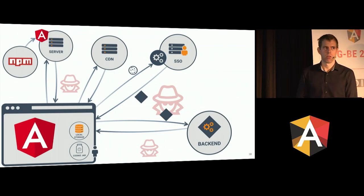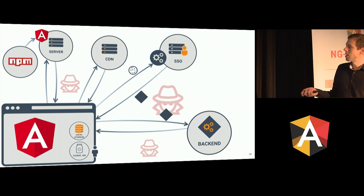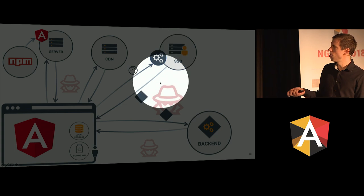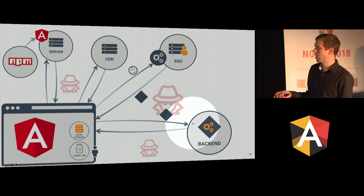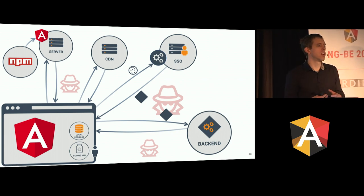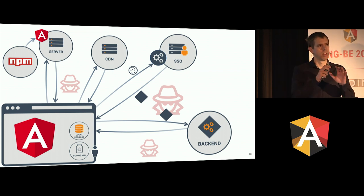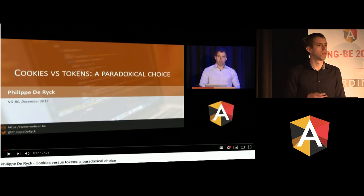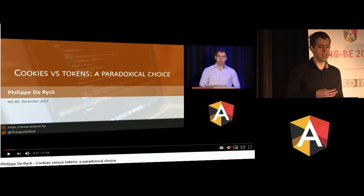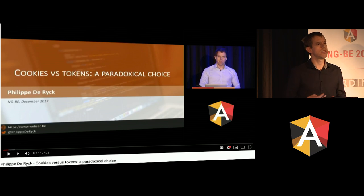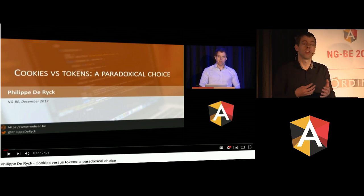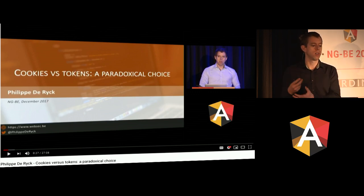Back to our architecture. Now we have authenticated the user and gotten some form of token to access the backend. There are a lot of ways to do that — you can transfer the token in a cookie, put it in an Authorization header, use a JWT or a session identifier. OAuth has reference tokens and self-contained tokens. I'll refer you to my talk from last year on cookies versus tokens for the details. What I want to talk about now is authorization itself — a few pitfalls with authorization on the backend, which is ultimately the goal of authentication in the first place.